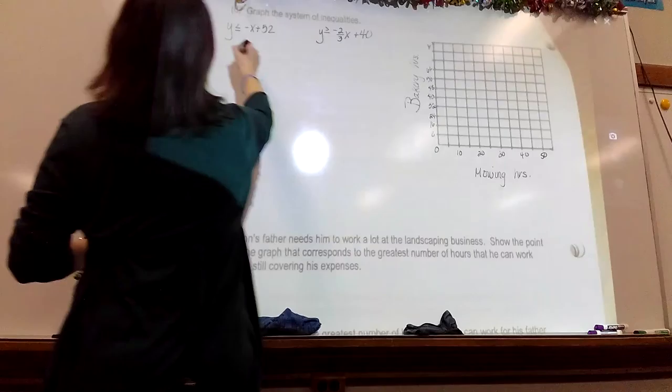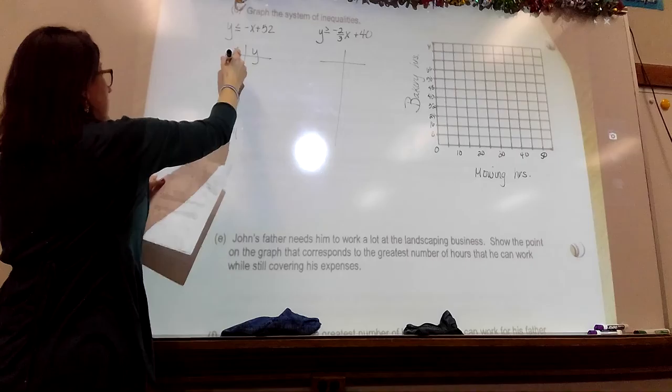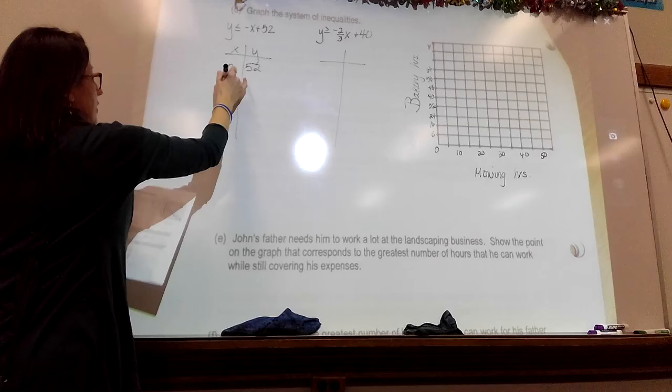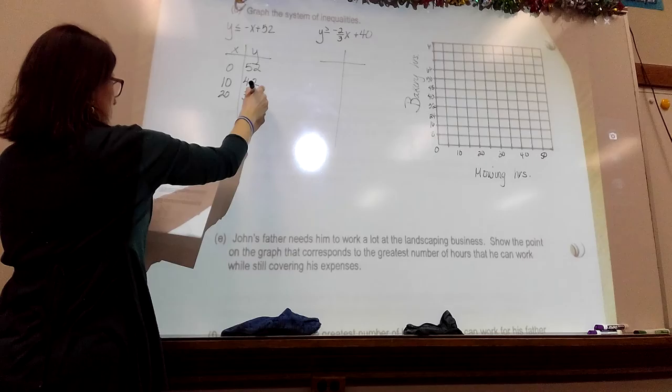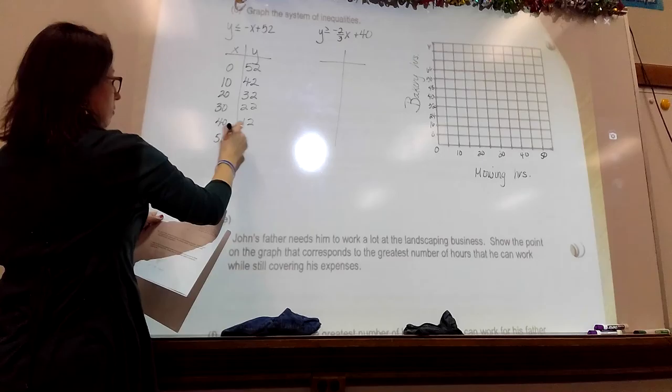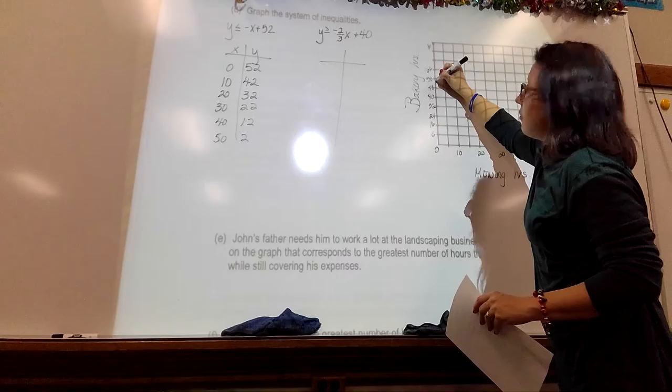Then, what I did is I went to my grapher, and I pulled a table of values for each of these, because I found it easiest. So, 0 is 52, and then I just picked these points. So, then I read in the table what is 10, 10 was 42, what is 20, 20 is 32, 30 was 22, 40 was 12, and 50 was 2, so that I could graph that as best I can.